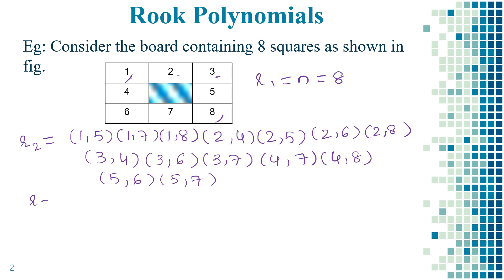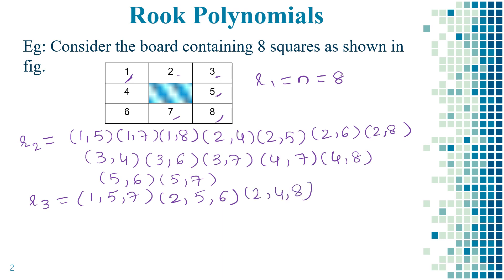Next let's have the placement of the three pans. So R3: the first pan can be placed over 1, the second pan over 5, and the third pan over 7 — so (1,5,7). This is the only way with the combination starting with 1. Then (2,5,6) and (2,4,8) — there are two possibilities with 2. And next for 3: (3,4,7). So these are all the possible ways for the placement of the three pans.